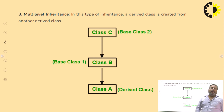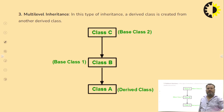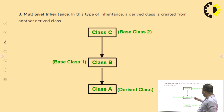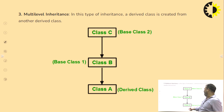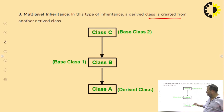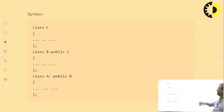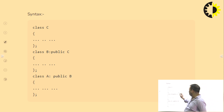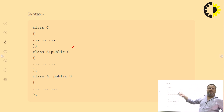Multilevel inheritance is like a grandparent-parent-child relationship. The child inherits the property of the parent, and the parent inherits the property of the grandparent, so ultimately the child inherits from both parent and grandparent. For example, B is a subclass of C, and A is a further subclass of B. A derived class is created from another derived class. The syntax is: class B public C, and class A public B — just like a parent-child relation.